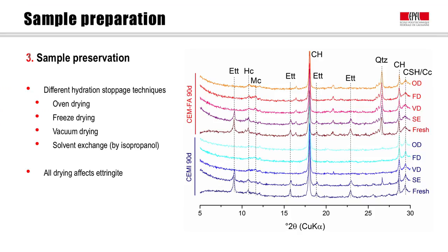The results of a round robin test on hydration stoppage clearly show that none of the hydration stoppage methods leave the hydrate assemblage entirely intact. In particular, ettringite and AFM phases are affected by drying. Oven drying, freeze drying and vacuum drying result in the removal of structural water and thus the decomposition of ettringite and AFM phases. Oven drying was observed to be more destructive than vacuum drying, and it appears that all direct drying methods result in the dehydration of cement hydrates. In case of crystalline products, this may lead to decomposition and an underestimation of the phase content in hydration-stopped samples.